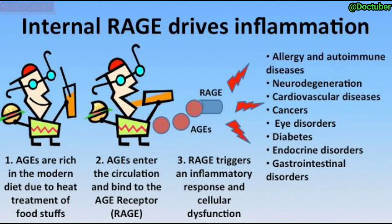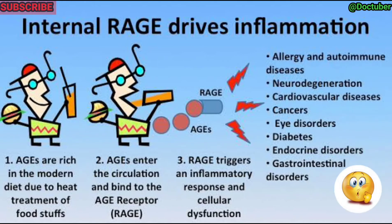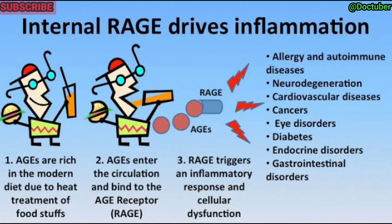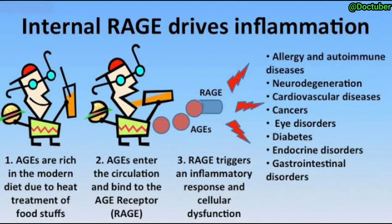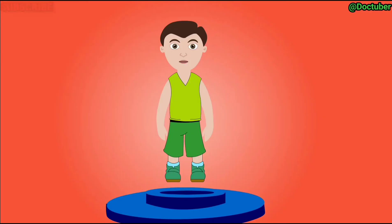AGEs are abundant in the modern diet. When AGEs enter the blood circulation, they bind to the AGE receptor called RAGE, which triggers an inflammatory response. This activates Nuclear Factor Kappa B, resulting in the release of inflammatory cytokines, which causes various diseases like allergy, autoimmune disease, neurodegeneration, cardiovascular diseases, cancer, eye disorders, diabetes, insulin resistance, endocrine disorders like thyroid dysfunction, and various gastrointestinal disorders.